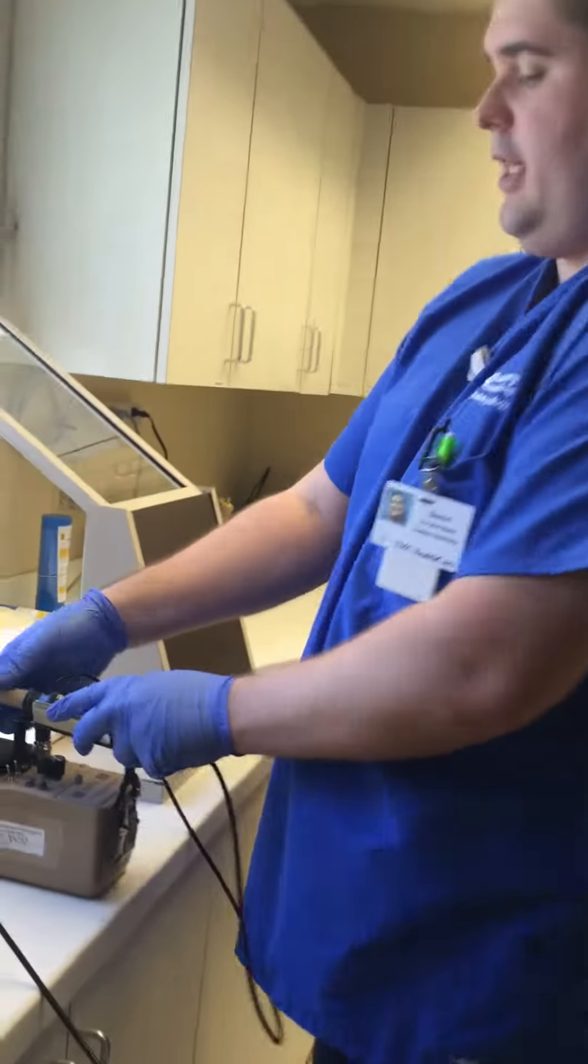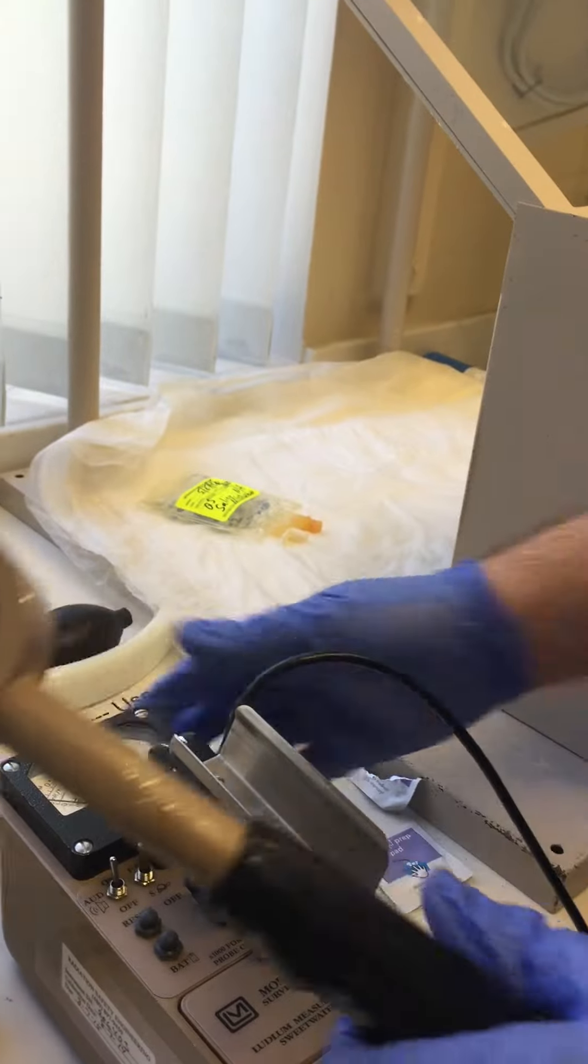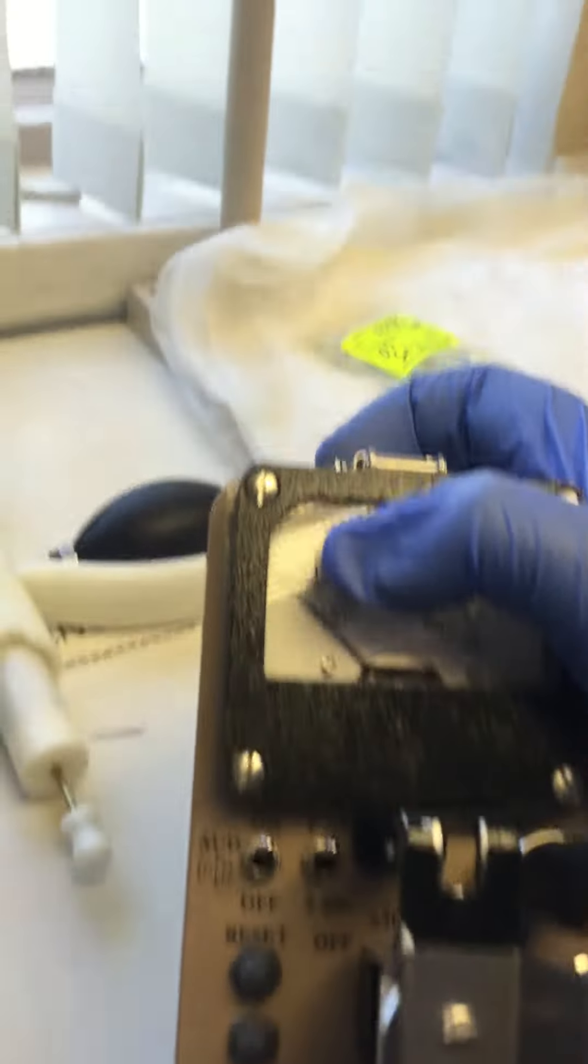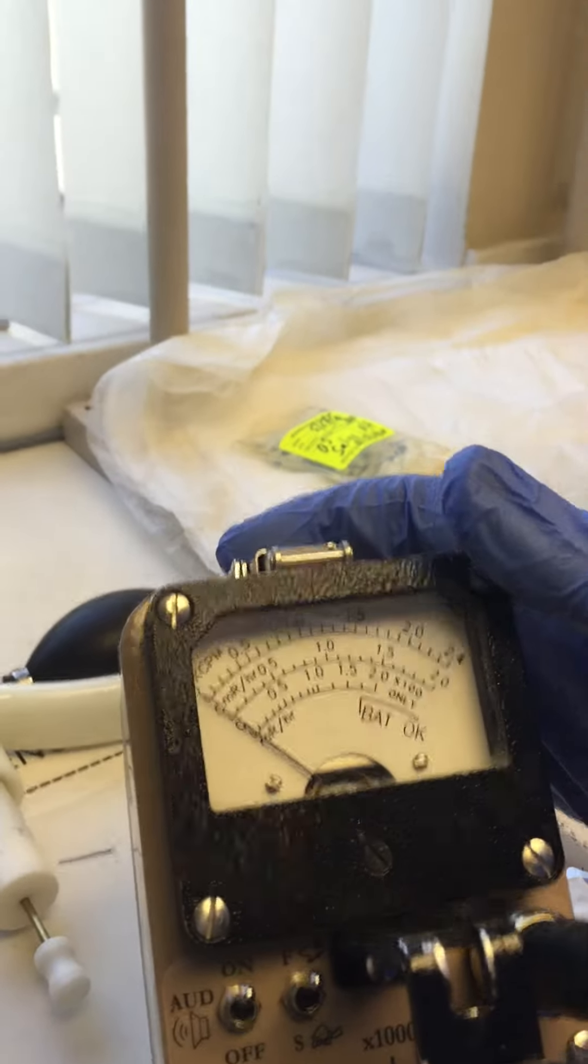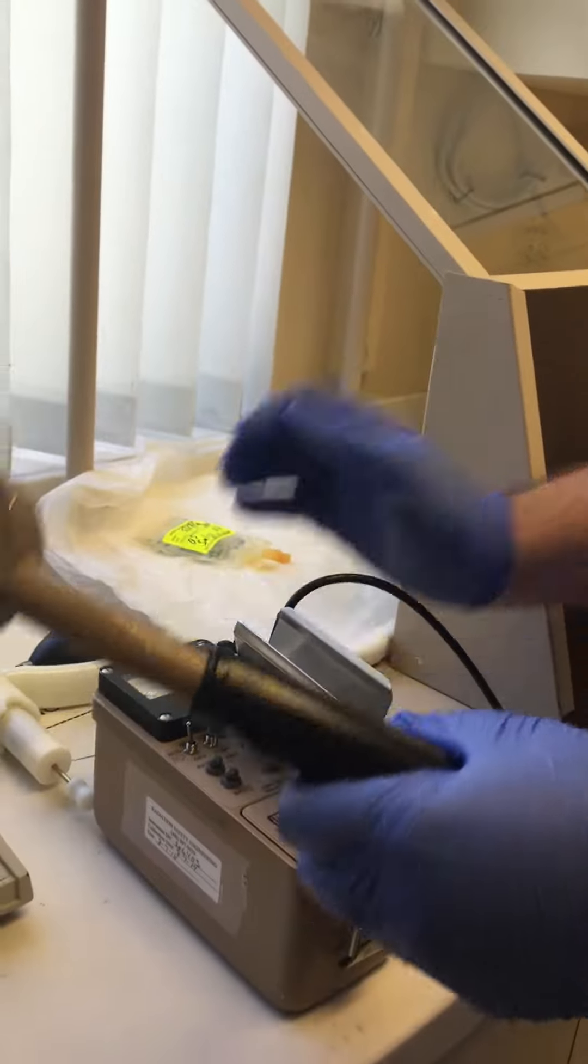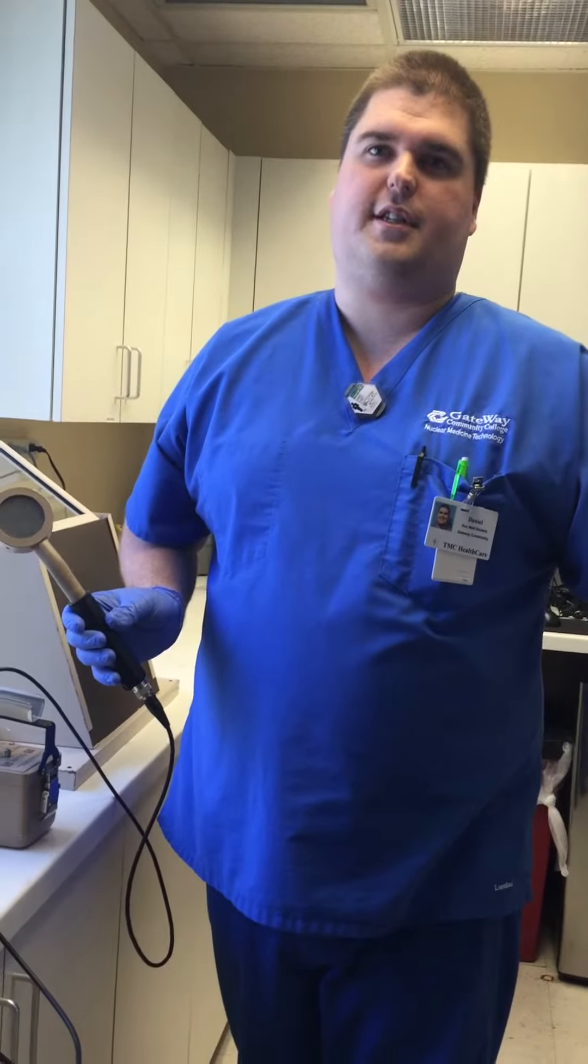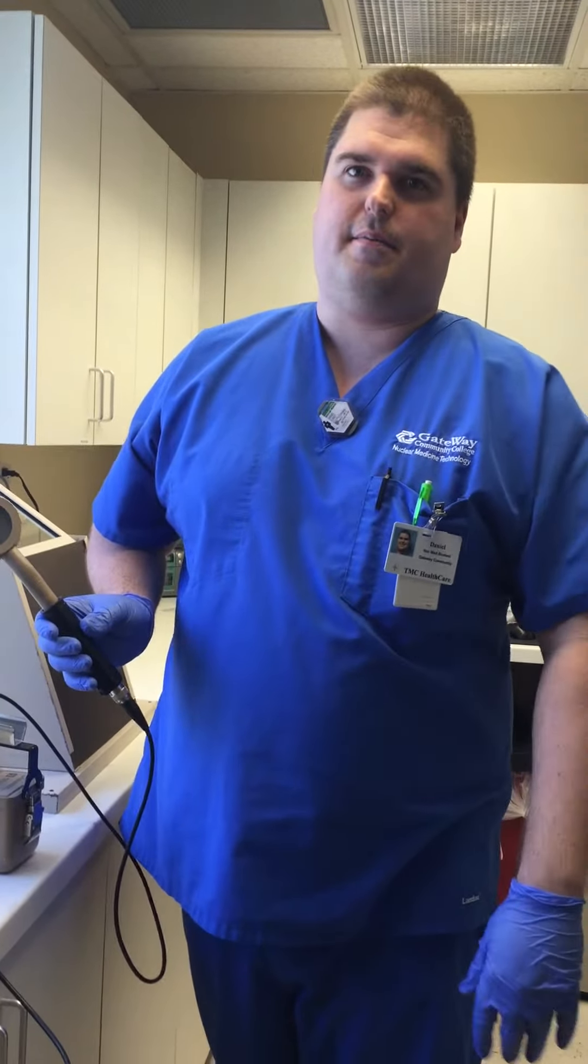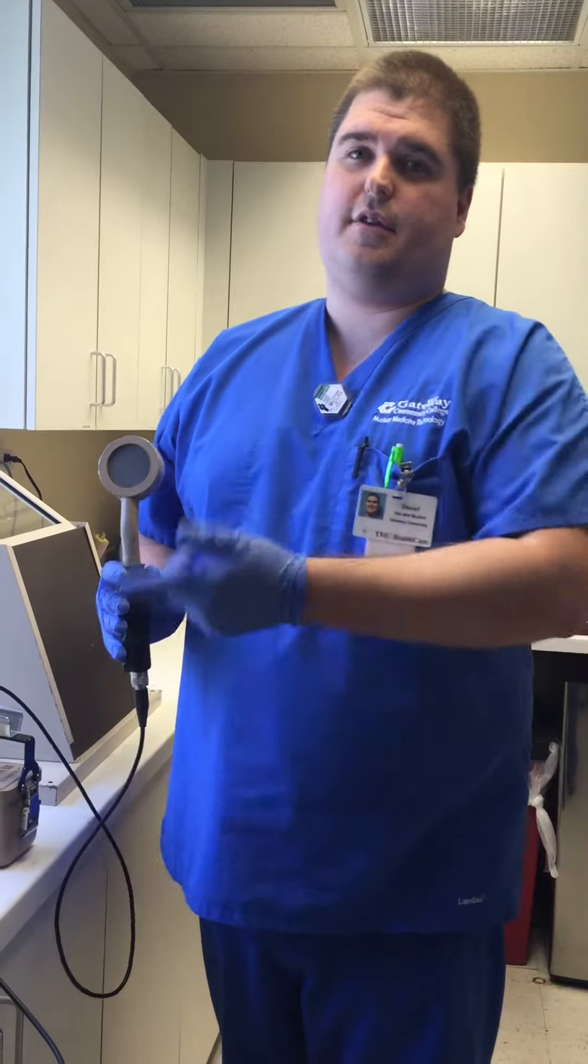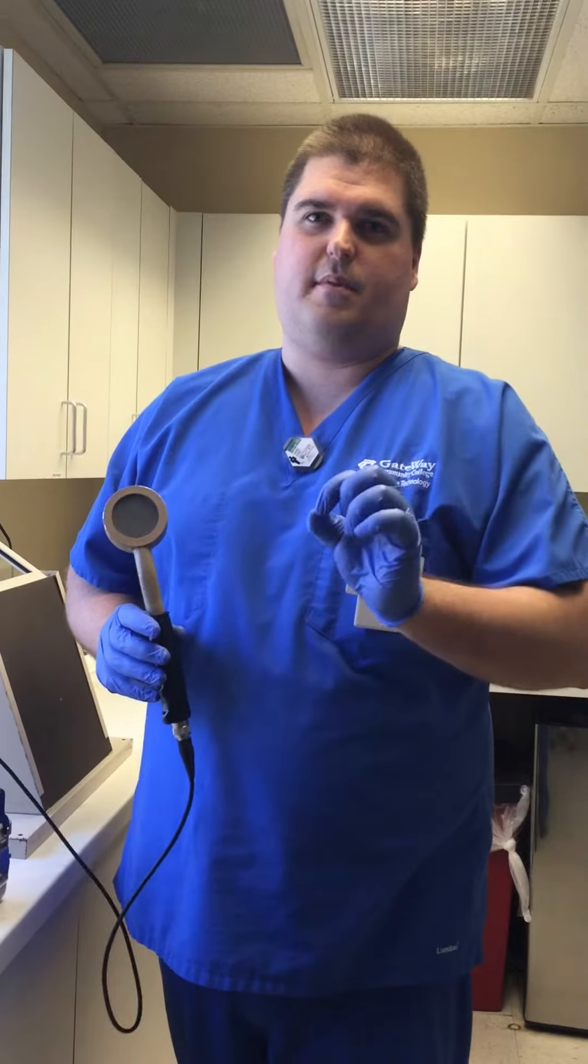When we're using this probe, which is called a pancake probe because it's flat and looks like a pancake, we're going to actually be using the CPM, the KCPM up here. This is used to detect contamination, so it would be in areas where you would expect not to have radioactivity. The reason why this is better than the other probe is because it's much more sensitive, so we can see very small amounts.